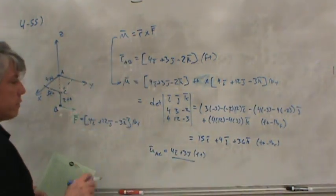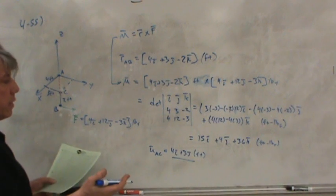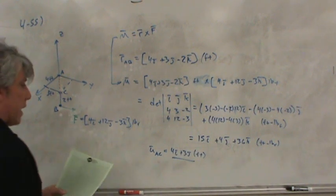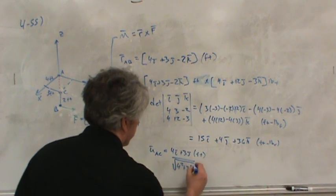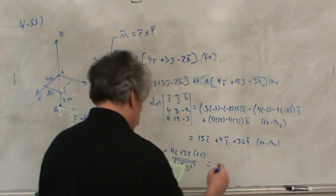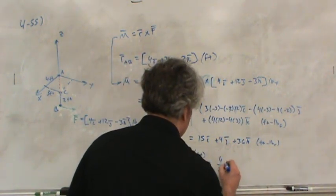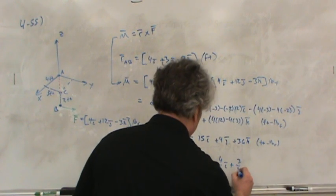Divided by, notice it's not a unit vector yet because it has a magnitude. In fact, its magnitude would be 5, right? So, I need to divide by the magnitude of the vector, 4 squared plus 3 squared, which is, of course, 5. And so, this comes out to 4 fifths i plus 3 fifths j.